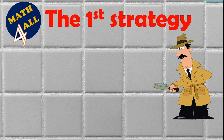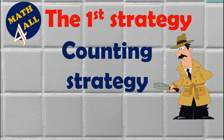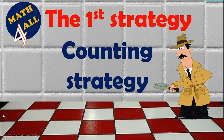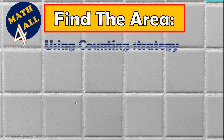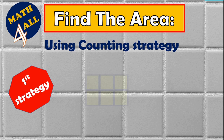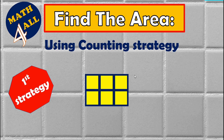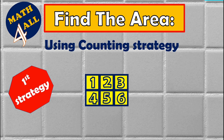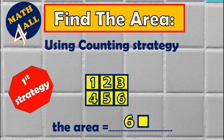The first strategy is the counting strategy. You count how many tiles are in your room to find the area. Let's count together: one, two, three, four, five, six. The area is six square units. Don't forget to say square units — it's not just six, it's six square units.